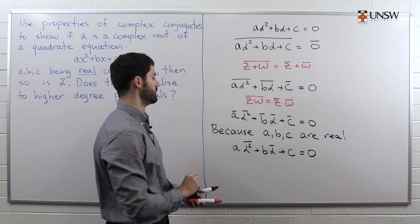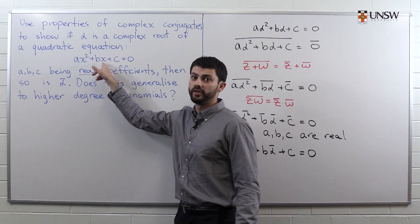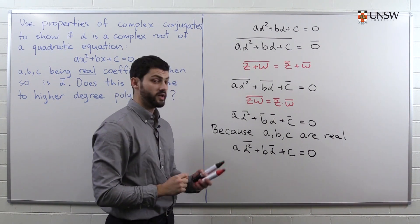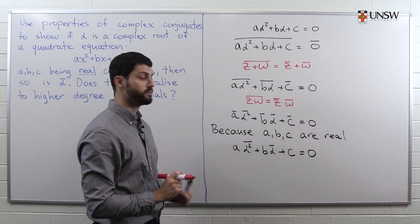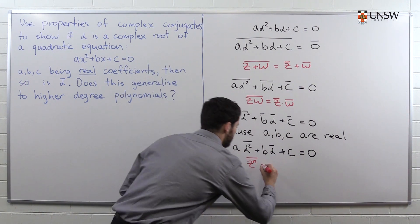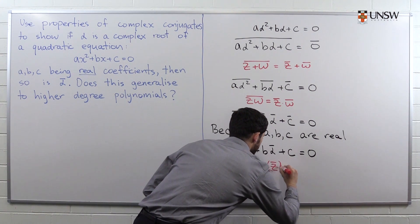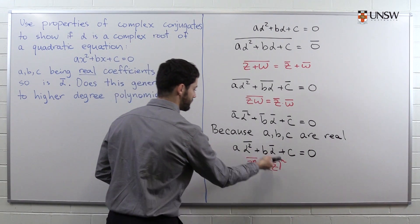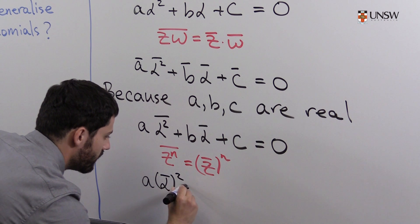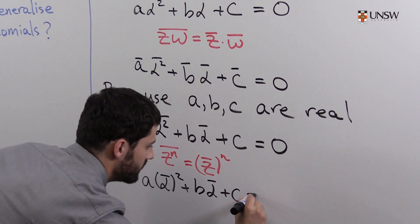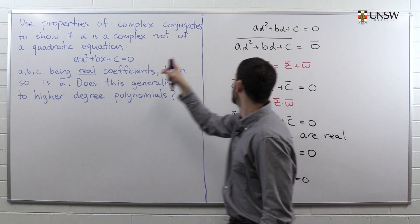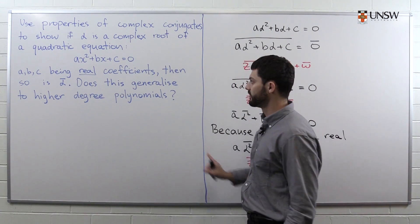We're almost done. This is almost like substituting the conjugate of alpha in, except here we have alpha squared conjugated, and we need the other way around — we need the conjugate of alpha, squared. Luckily, there is another rule: if you take a complex number, raise it to some power, and take the conjugate, that's the same as first conjugating and then raising to that power. Applying this rule to the first term, we get a·(conjugate of alpha) squared plus b·(conjugate of alpha) plus c equals zero. And that's precisely what we get if we substitute the conjugate of alpha instead of x, which by definition means the conjugate of alpha is a root of this equation.